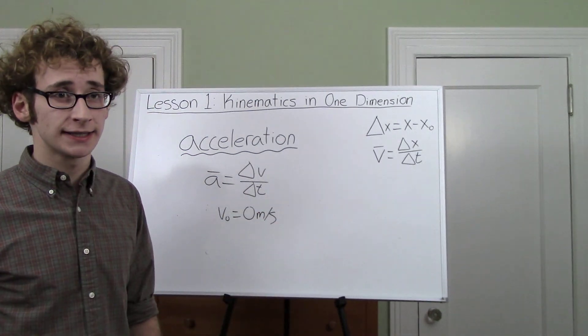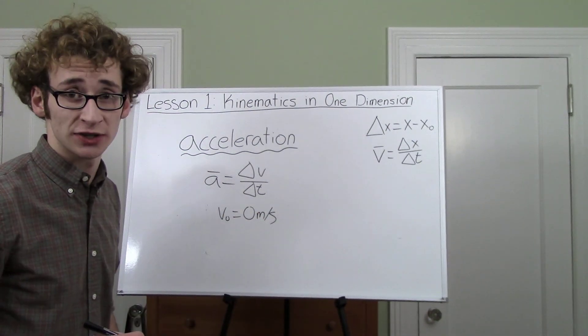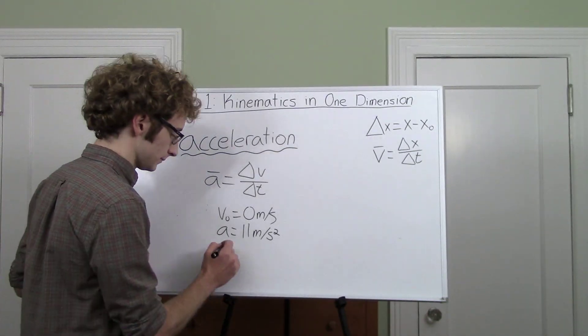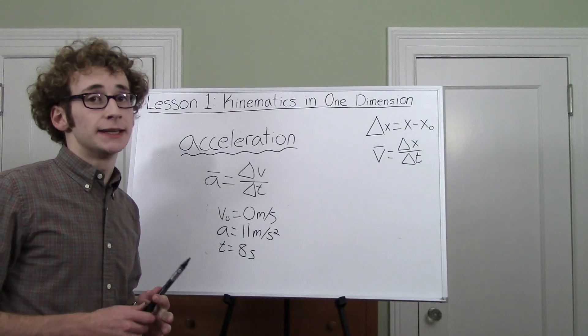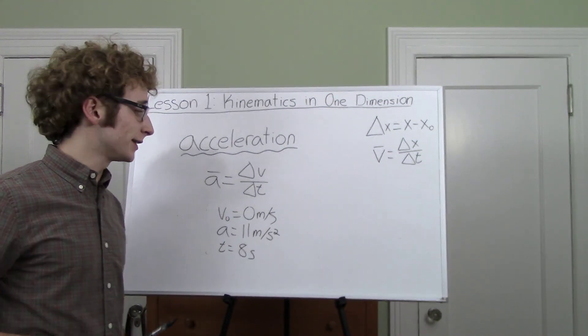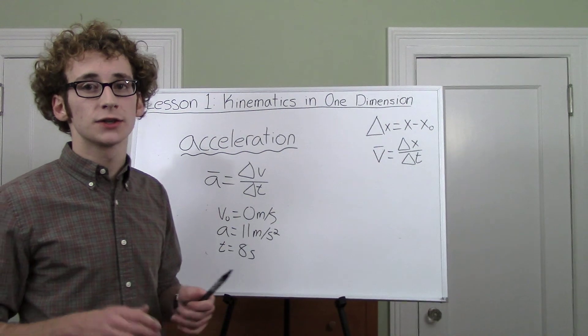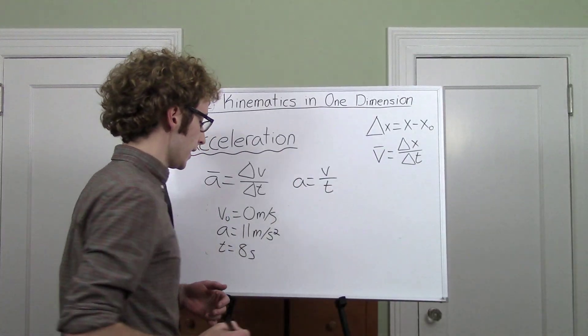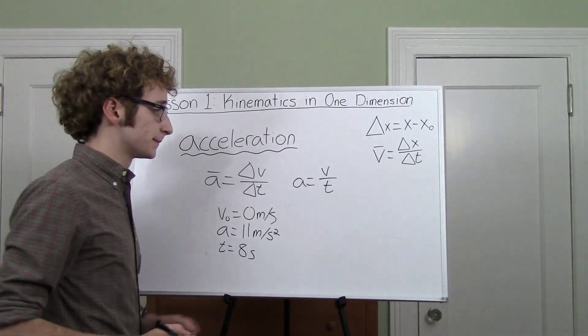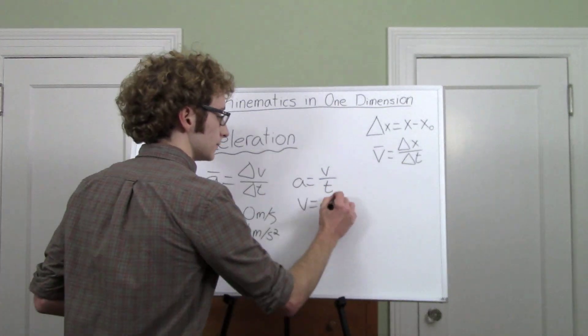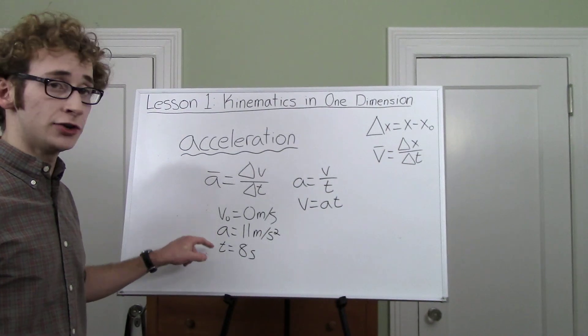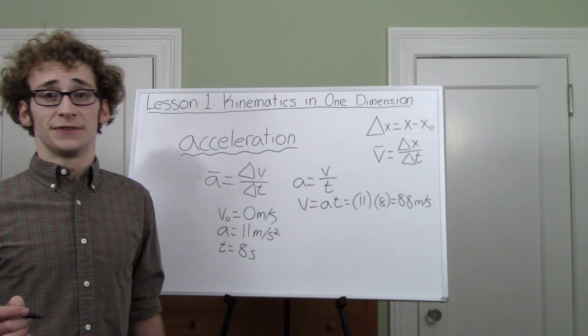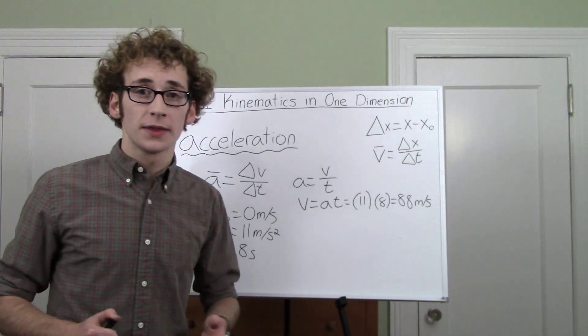Now say I start at rest and I accelerate at 11 meters per second squared. And say I'm accelerating for eight seconds. Now delta V is final minus initial. We don't know final yet, but we know that initial is zero. So that means that delta V in this case is just V final. And we want to solve for V through a little algebra. And now plug in your A and your T. And you get 88 meters per second, which is very fast. So there you go.